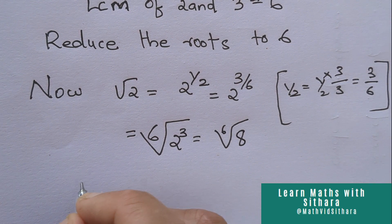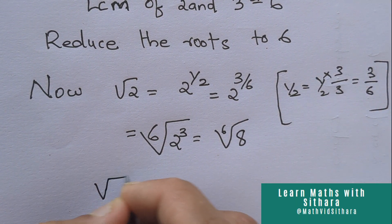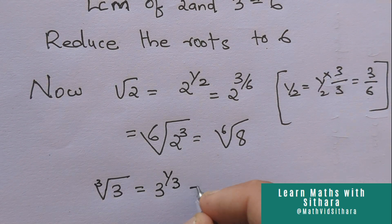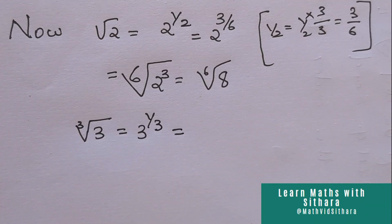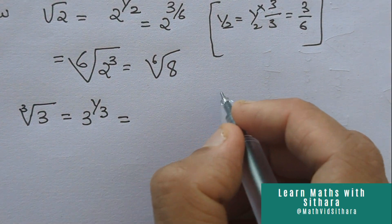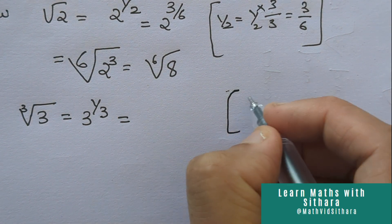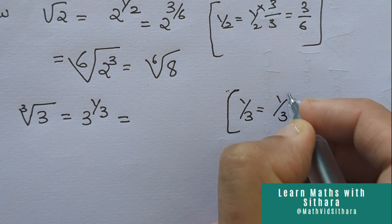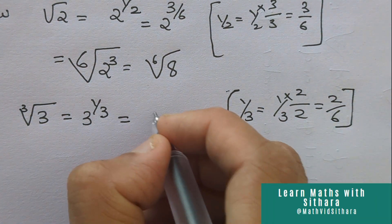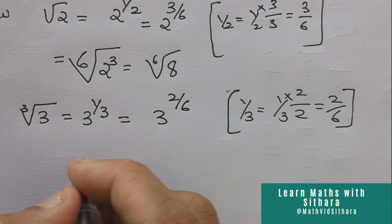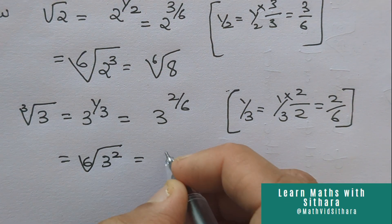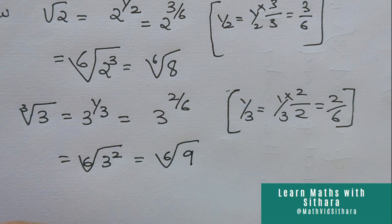Next, we do the same with cube root of 3, which equals 3 raised to 1 by 3. We find the equivalent fraction: 1 by 3 multiplied by 2 by 2 gives 2 by 6. Applying 2 by 6, we get the 6th root of 3 squared. Since 3 squared is 9, this gives us the 6th root of 9.